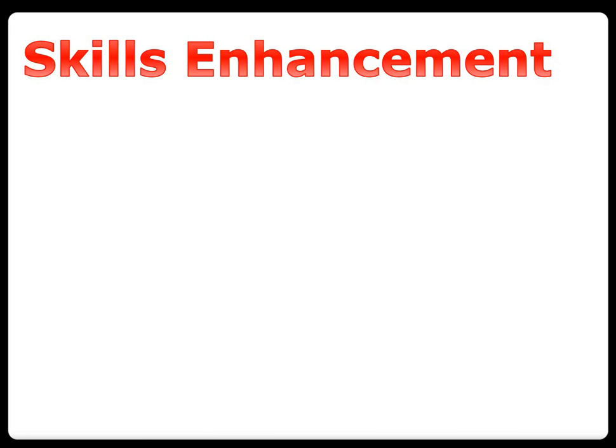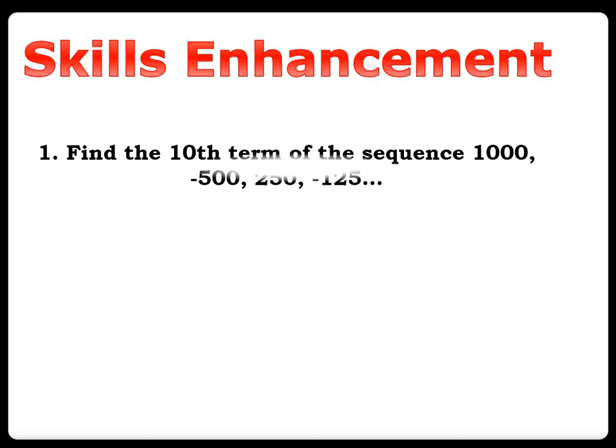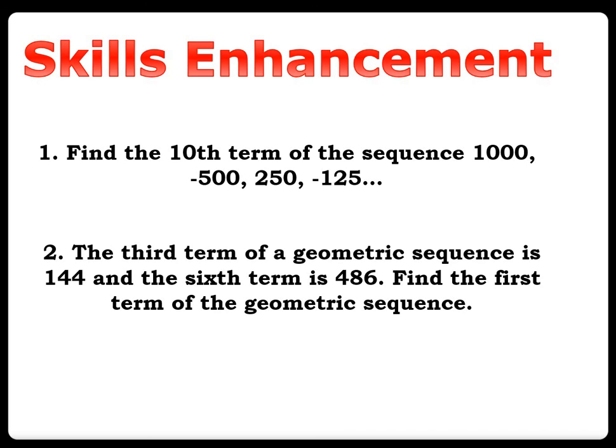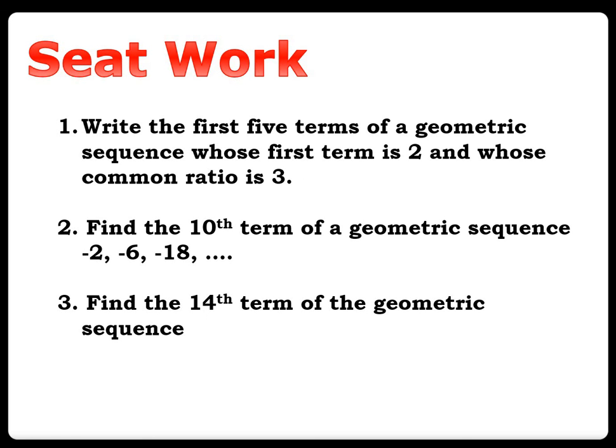For the enhancement exercises: Find the tenth term of the sequence 1000, negative 500, 250, negative 125. The third term of a geometric sequence is 144 and the sixth term is 486 — find the first term. Write the first five terms of the geometric sequence whose first term is 2 and whose common ratio is 3. Find the tenth term of negative 2, negative 6, negative 18. And find the 14th term of the geometric sequence.